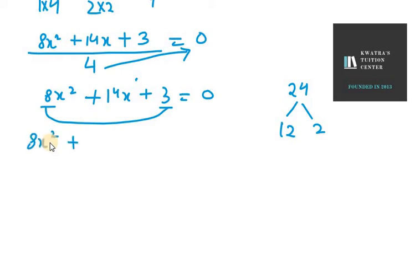So 8x squared plus 12x plus 2x plus 3 equals 0.